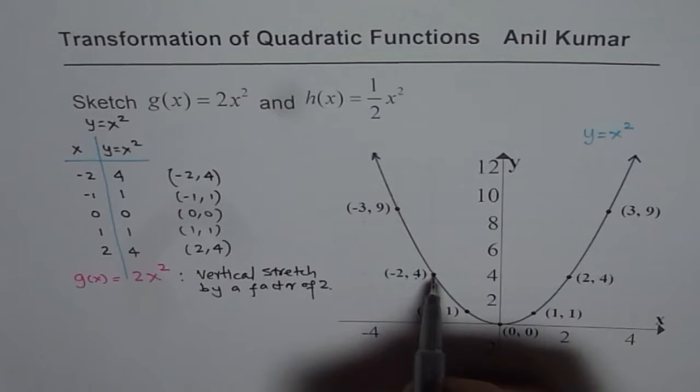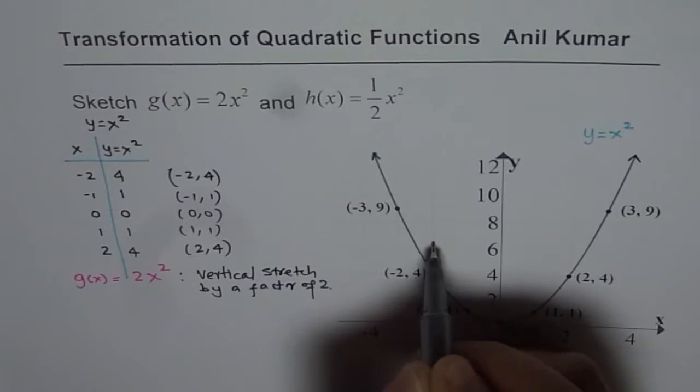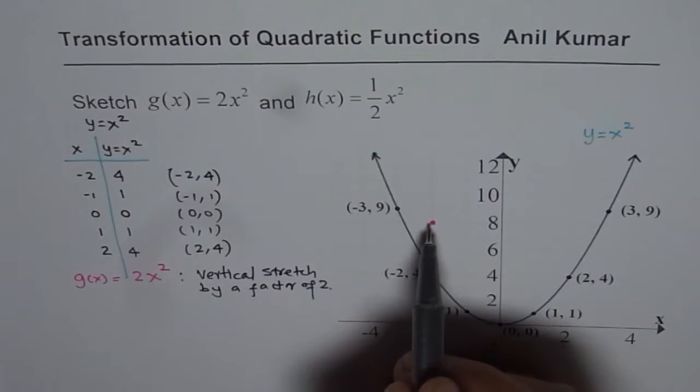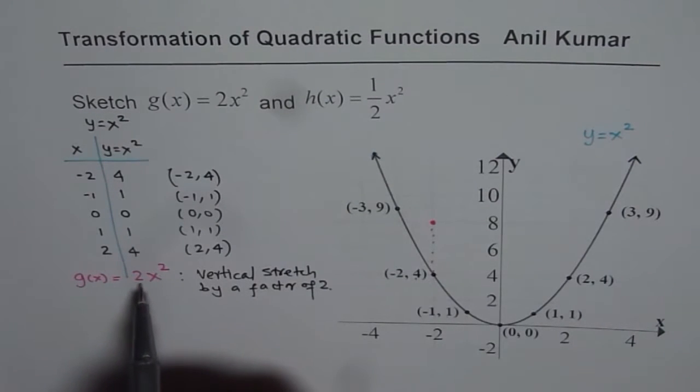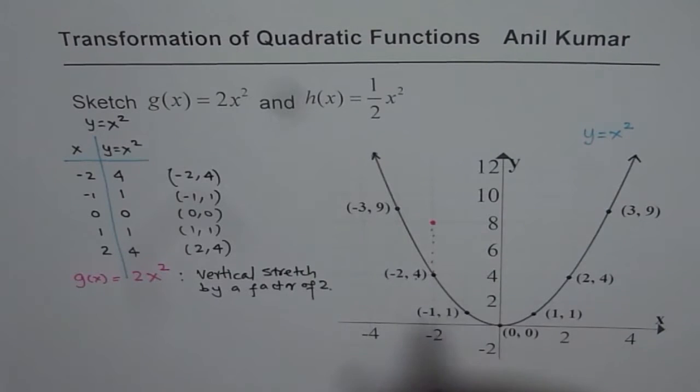4 times 2 is 8. So this point goes upwards and it will be at minus 2, 8 on the graph of g of x which is 2x square.